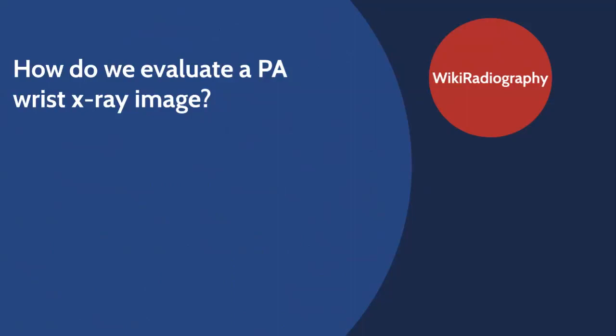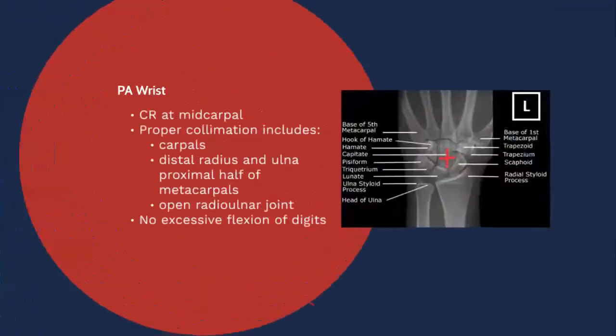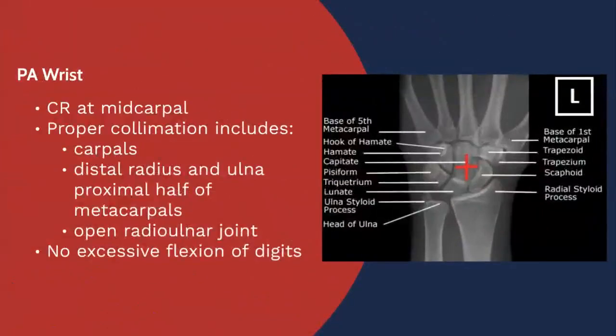Talking about the PA wrist question — how do we evaluate a PA wrist image? When we learn imaging procedures, it's important to think about evaluation criteria first and foremost, because if we understand bony anatomy and how images are going to be evaluated, this often allows us to figure out shortcuts with how best to position for procedures.